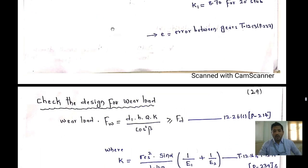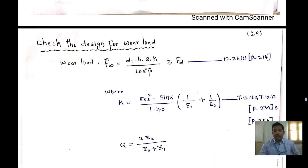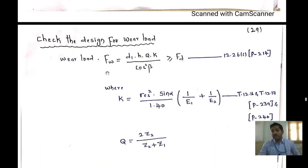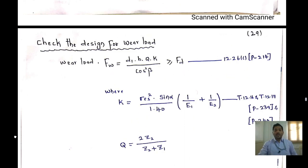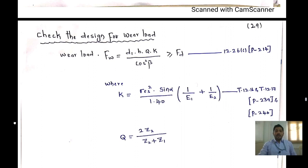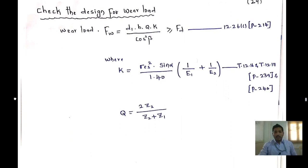To check the design for wear load, use the formula: F_w = d₁ · b · Q · k / cos²β. I hope no one has any confusion. If you have any doubts regarding this session, please write in the comment box, and don't forget to subscribe to my channel. Thank you.